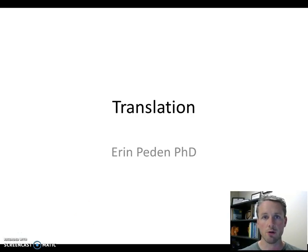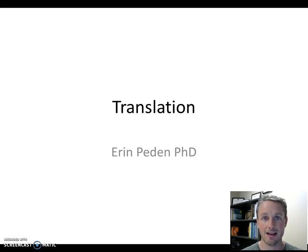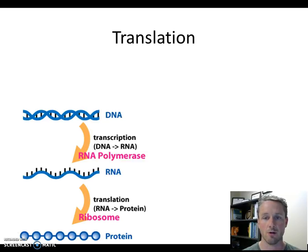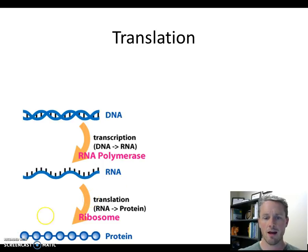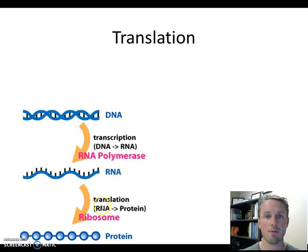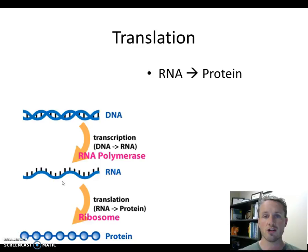In this video I want to give a really simplified overview of the process of translation. Translation is a really complex process and there's endless detail we could add, but today we're going to keep this process pretty simple. Translation is the last step in the central dogma of molecular biology. Previously we've talked about DNA replication and transcription. Transcription produced an RNA molecule, and now in translation we're going to read that RNA molecule and convert the information into a protein molecule using the ribosome. So translation uses RNA information and produces proteins.